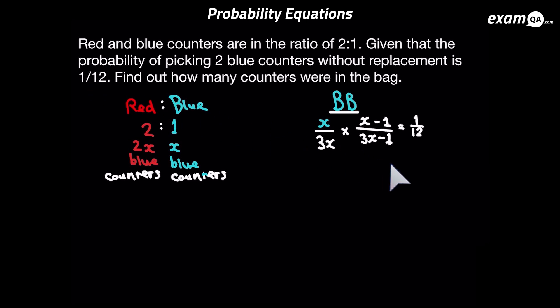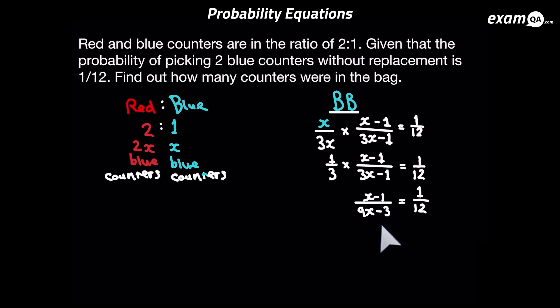Now let's start to simplify this. To make your life a lot easier you should definitely cancel down the x over 3x — since x is at the top and the bottom you can cancel it off, and doing that will make your equation much easier to solve. If you don't do that you're going to get a quadratic to solve which will be a lot tougher. So let's go ahead and multiply these fractions together. The top stays as x minus 1, and the bottom was times by 3 so it became 9x minus 3, and that's still equal to 1 over 12.